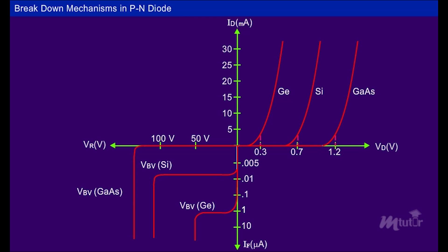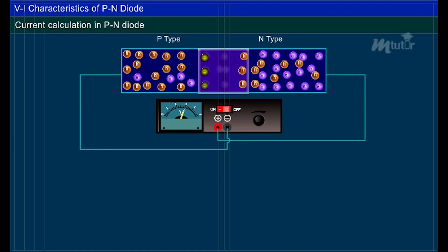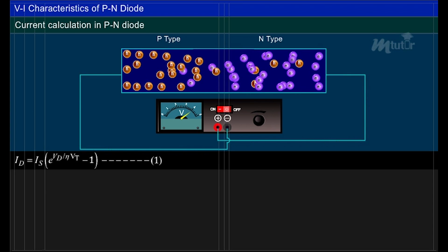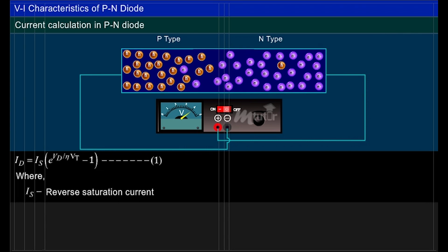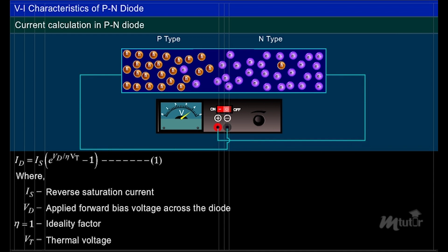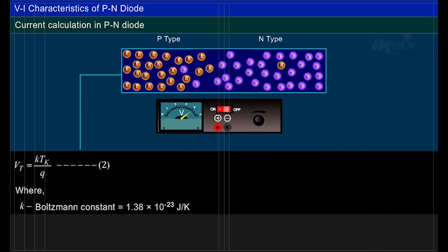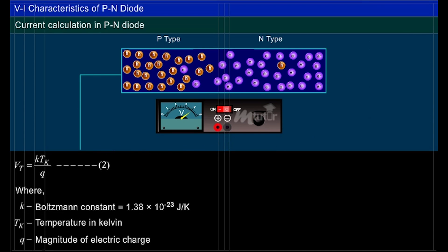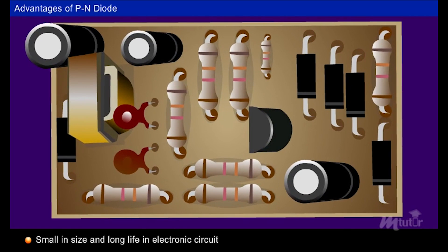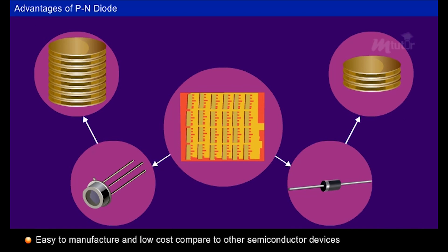The reverse breakdown voltage depends on both Zener breakdown and Avalanche breakdown. The current flow can be calculated using the Shockley equation for both forward and reverse bias of the diode, where IS is the reverse saturation current, VD is the applied forward bias voltage across the diode, and the ideality factor is assumed as 1. VT is the thermal voltage, where K is the Boltzmann constant equal to 1.38 × 10⁻²³ joules per Kelvin, TK is temperature in Kelvin, and Q is the magnitude of electric charge. P-N diodes have the following advantages: they are a basic structure for all active devices, small in size, with long life in electronic circuits, and manufacturing cost is low compared to other active semiconductor devices.